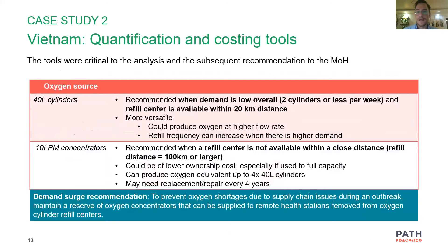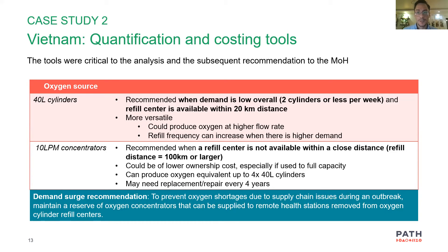The analysis came up with some simple recommendations. 40-liter cylinders are a good option in urban settings close to a source of oxygen, where they'll be relatively cheaper than concentrators. But for facilities farther away, you want to start thinking about oxygen concentrators. There are trade-offs — concentrators can break — but for the cost component, they tend to be a better long-term solution. That's one quick example from Vietnam where we used this tool, but it could be applied in many other contexts.